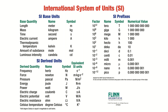SI-derived units are units of measurement derived from the seven base units specified by the International System of Units. Examples of SI-derived units include hertz for frequency, newton for force, pascal for pressure, joules for energy, and many more.